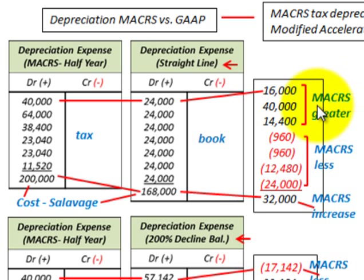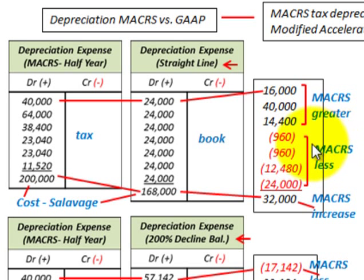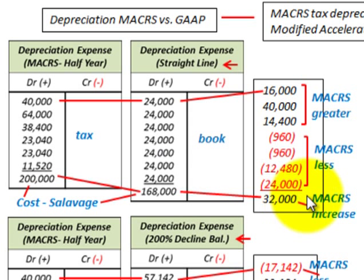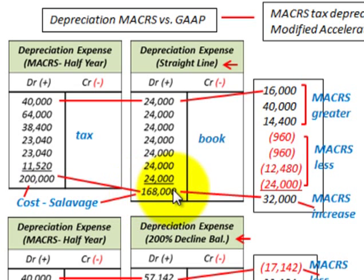For tax purposes, we have greater depreciation in the early years, which reduces our net income. In the later years, we have a lesser amount of tax depreciation versus our book depreciation. But when we look at the total amount, for tax purposes we depreciate that extra $32,000 down to $200,000 versus the GAAP $168,000. You can see how the depreciation method affects your net income.